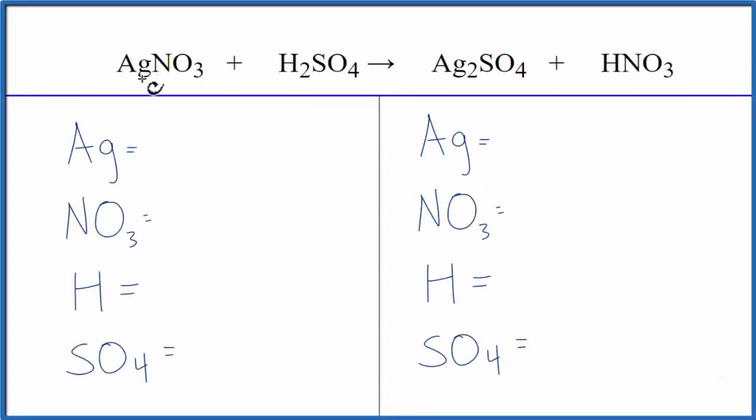In this video, we'll balance the equation AgNO3 plus H2SO4, that's silver nitrate plus sulfuric acid. Let's count the atoms up. We have one silver, and then NO3, that's a nitrate, it's a polyatomic ion,